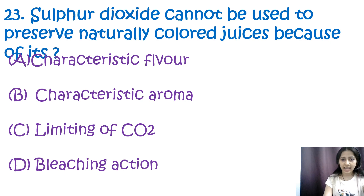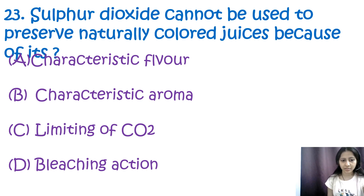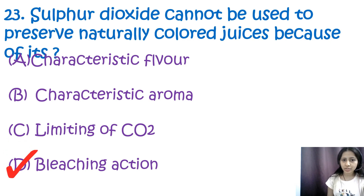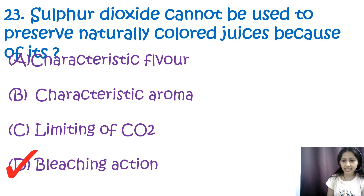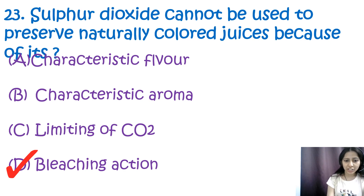Question 23: Sulfur dioxide cannot be used to preserve naturally colored fruit juices because of its — options include bleaching action. The correct answer is D, bleaching action. Sulfur dioxide cannot be used to preserve naturally colored juices because it causes discoloration in naturally colored juices such as falsa, jamun, or pomegranate juice.